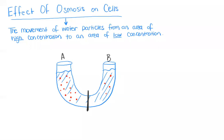Hello everyone. Today we are going to be looking at the effect of osmosis on cells, on both plant and animal cells. We already know osmosis is defined as the movement of water particles from an area of high concentration to an area of low concentration. So whenever we see the term osmosis, you know right away that we are focusing on the movement of water particles.